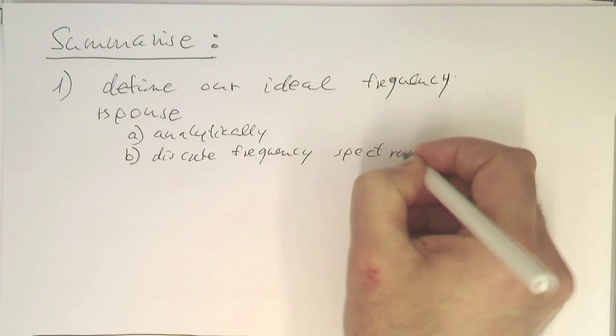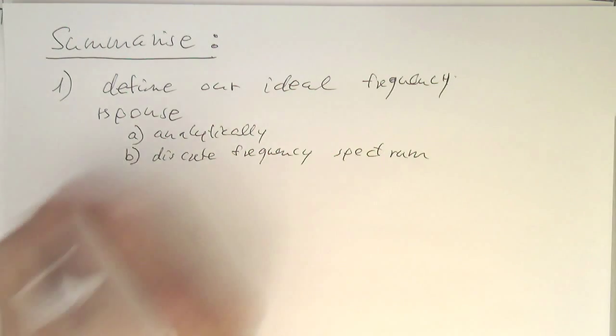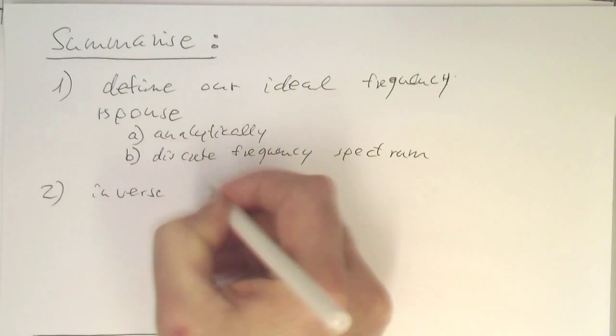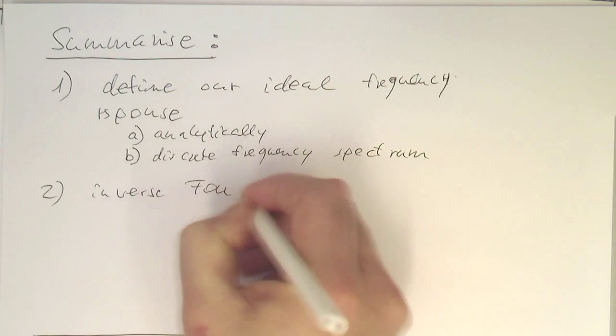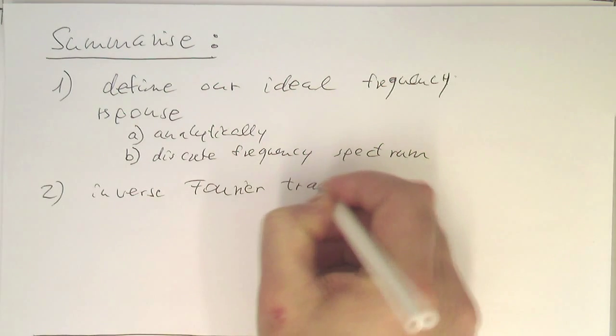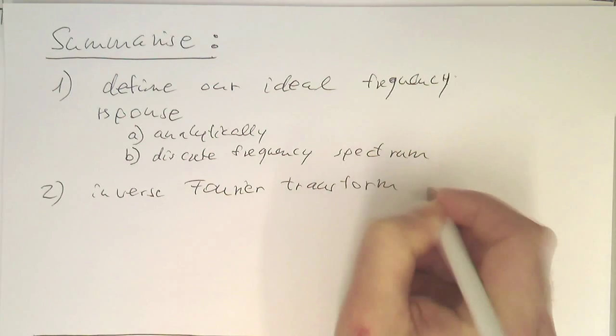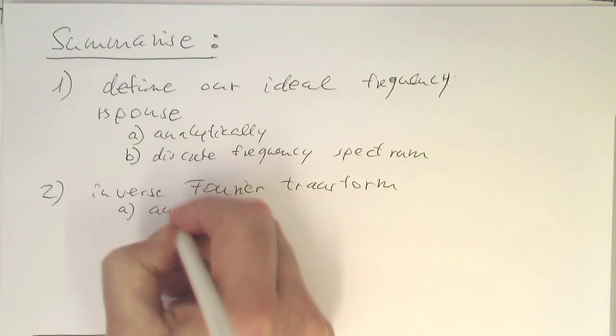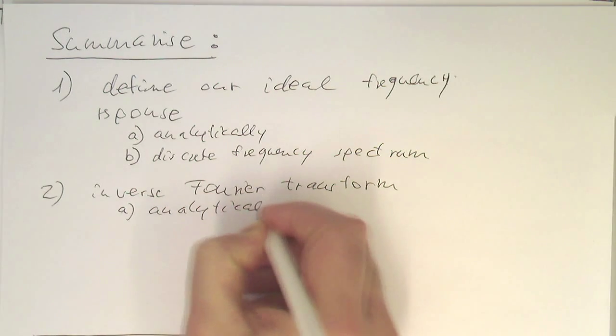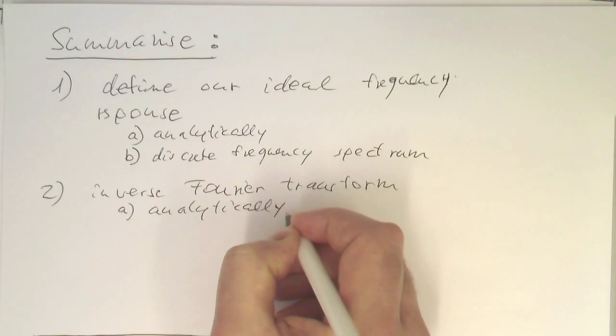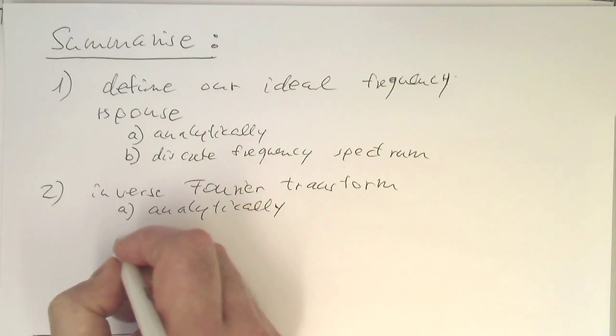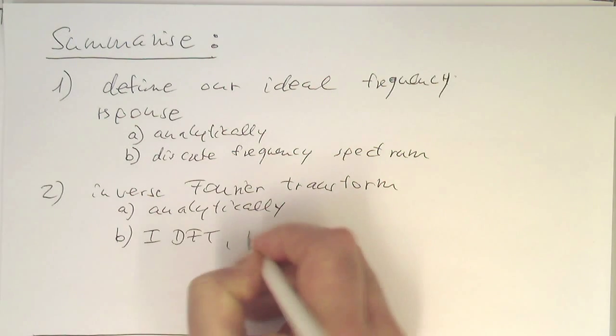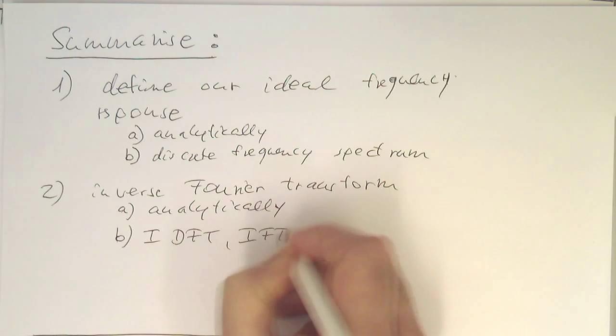And we are using this in our discrete inverse Fourier transform. So, once we have defined this, we do the inverse Fourier transform. So, this can be either A analytically, just by defining our integral, or B, we are just using the inverse discrete Fourier transform or the inverse fast Fourier transform.